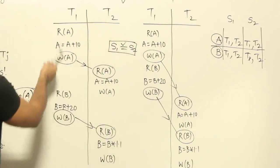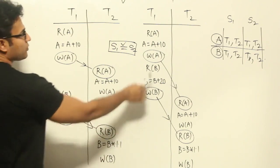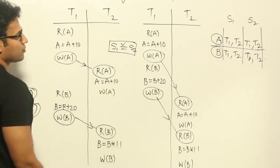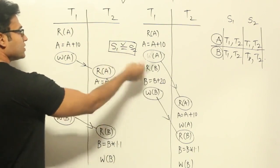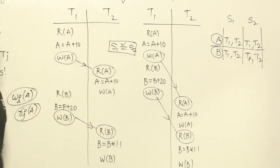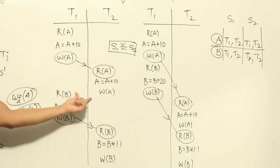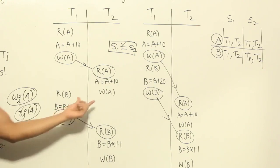S2 is a non-serial schedule which is view equivalent to a serial schedule. Therefore, we are able to find a serial schedule to which it is equivalent, and so we can call S2 view serializable.